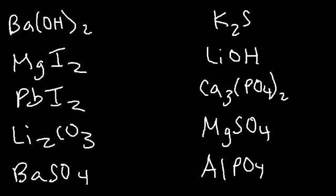Go ahead and try these ten problems. Pause the video and see if you can do it, then unpause to check your answer. Barium hydroxide — hydroxides are generally insoluble, but barium is a group 2 metal and barium is one of the exceptions, so it's going to be soluble. We're going to write AQ for soluble. Magnesium iodide — iodides are generally soluble except with silver, lead, and mercury. Magnesium is not an exception, so it's going to be soluble.